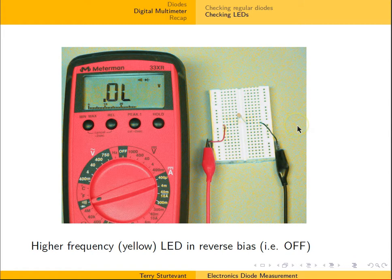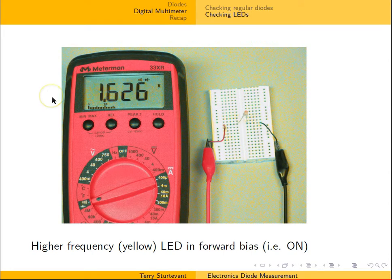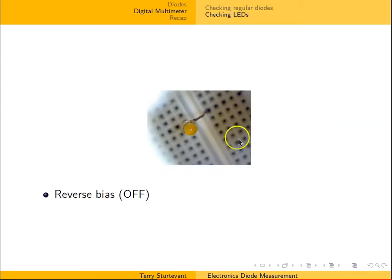Now here we have a yellow LED. We can tell it's in reverse bias because we see the open circuit. In forward bias, again we get a voltage of about 1.6 volts. Looking up closely, when it's in reverse bias the LED looks like this, and when it's in forward bias we can see that it's clearly come on.